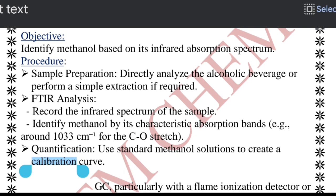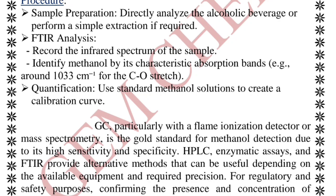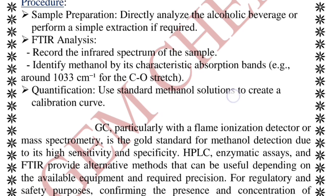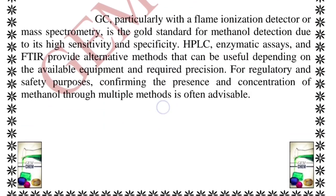For FTIR specifically, the identification mark for methanol is at 1033 cm⁻¹. HPLC, enzymatic assay, and FTIR provide alternative methods that are useful for determining available quantity with the required precision. This ends the topic for Chemistry in Daily Life Part 2. The PDF will be uploaded and the link will be given in the description box. Hope this was helpful — thank you for watching.